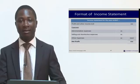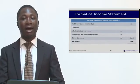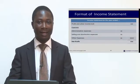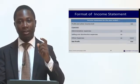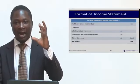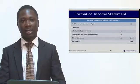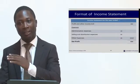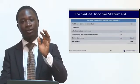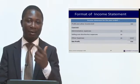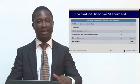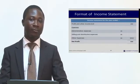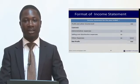The only addition here is learning how to prepare the manufacturing account, which we have explained clearly. Simply determine your direct costs, aggregate them to find the prime cost, determine your indirect costs, then add all your indirect costs to your direct costs, and if there is any work in progress at the beginning and at the end, make an adjustment to determine your cost of production.